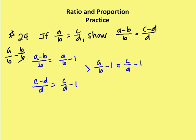And that leaves me with A over B minus 1 is equal to C over D minus 1. If I add 1 to both sides, I'm left with A over B is equal to C over D. And that's what I'm trying to prove.